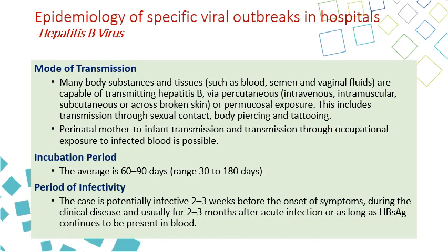For the mode of transmission, it's a blood-borne pathogen. Many body substances and tissues like blood, semen, and vaginal fluid are contaminated with hepatitis B virus in infected patients. Any contact with these fluids through intravenous, intramuscular, subcutaneous, or across broken skin or mucosal exposure may result in developing hepatitis B. That's why hepatitis B is also transmitted through sexual transmission. It can also be transmitted from mother to infant during pregnancy and birth.